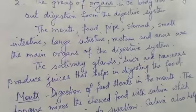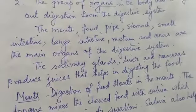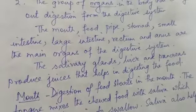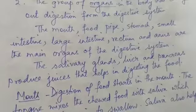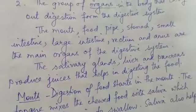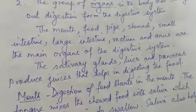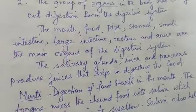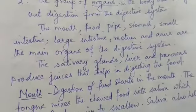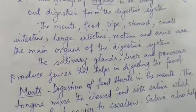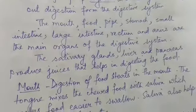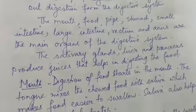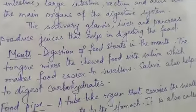The salivary glands, liver and pancreas produce juices that help in digesting the food. Let us learn about the different organs of the digestive system.